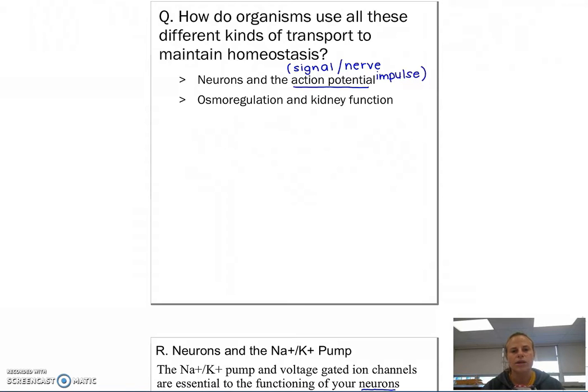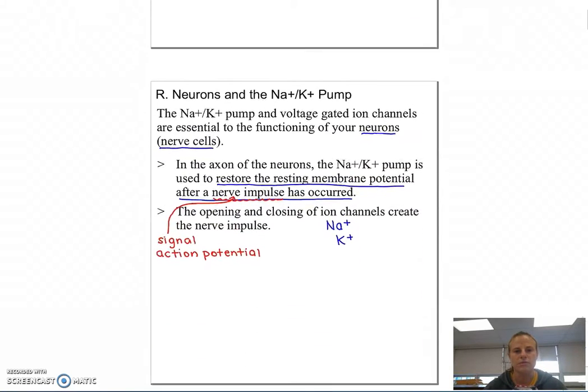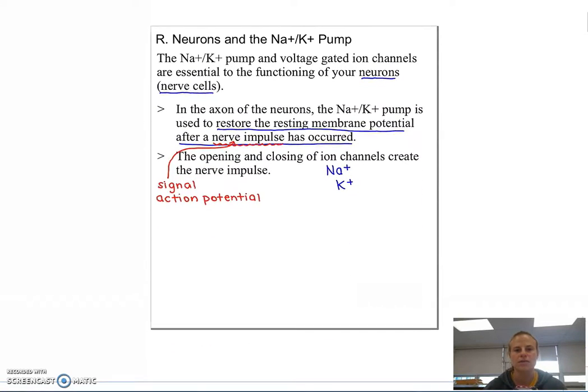Another way organisms use transport to maintain homeostasis is with osmoregulation that happens in the kidney. We'll get to that in a little while. But let's talk about neurons some more and the role of the sodium-potassium pump.